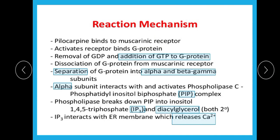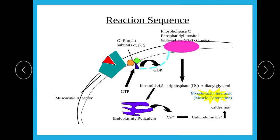Next is the reaction mechanism. This will explain how pilocarpine is primarily used in ophthalmology and what effect is produced. Here is the diagram for the mechanism of how pilocarpine causes constriction of the pupil. Pilocarpine binds to muscarinic receptors and activates the G protein. The G protein has subunits alpha, beta, and gamma. GTP binds to the G protein while GDP is removed.